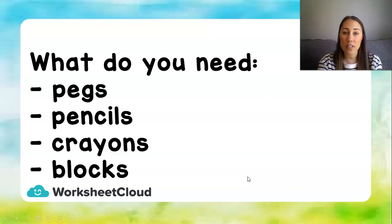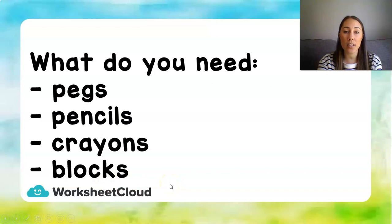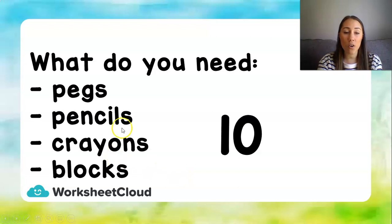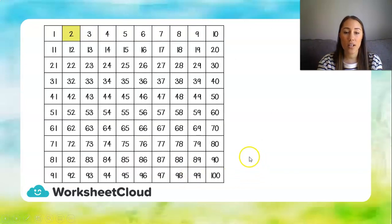So, what do you need for this lesson? You are going to need either pegs - clothing pegs from the washing line - or pencils, or crayons, or blocks, or anything that you can count. You need 10 of the same item. So, 10 of whatever you can count. Once you've got your counters, you can just put them to the side. We don't need them yet.